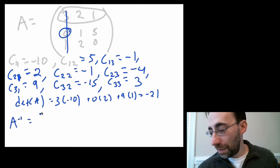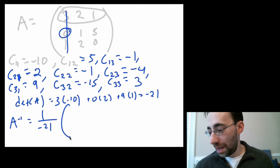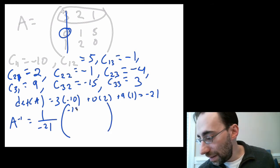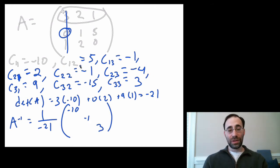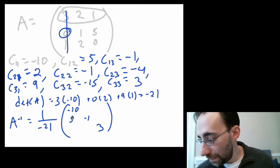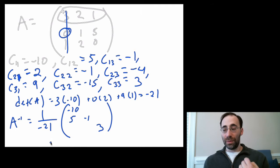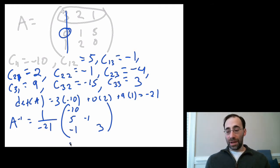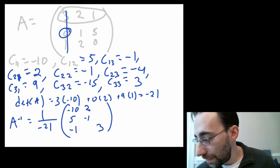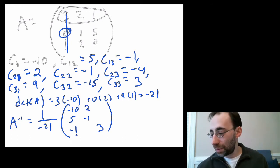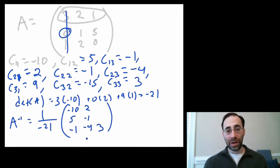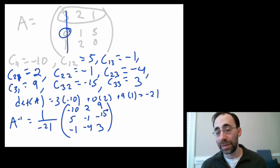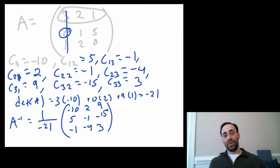The inverse is 1 over -21 times the transpose of the cofactor matrix. The diagonal cofactors stay in place: C11=-10, C22=-1, C33=3. The off-diagonal cofactors get flipped: C12=5 goes to position (2,1), C21=2 goes to position (1,2), C13=-1 goes to position (3,1), C31=9 goes to position (1,3), C23=-4 goes to position (3,2), C32=-15 goes to position (2,3). That gives us the adjoint matrix.